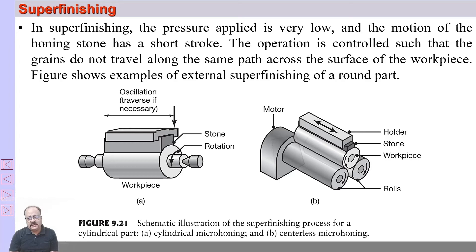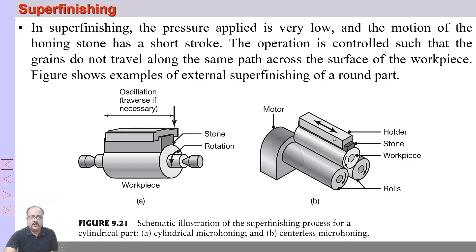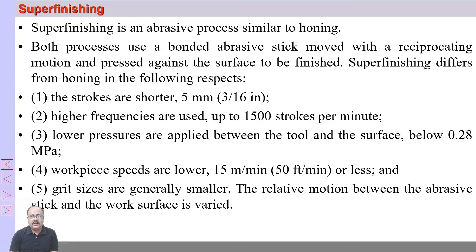Super finishing is a process similar to honing where you use a stone made of abrasives, frequently used for super finishing of round or cylindrical parts — called cylindrical micro-honing — and also centerless micro-honing. Differences from honing: in super finishing the strokes are much shorter, around 5 mm maximum; frequencies are high, up to around 1500 strokes per minute; pressures are very low compared to honing; workpiece speed is 15 meters per minute or less; and the grit size is generally smaller than that used in honing.